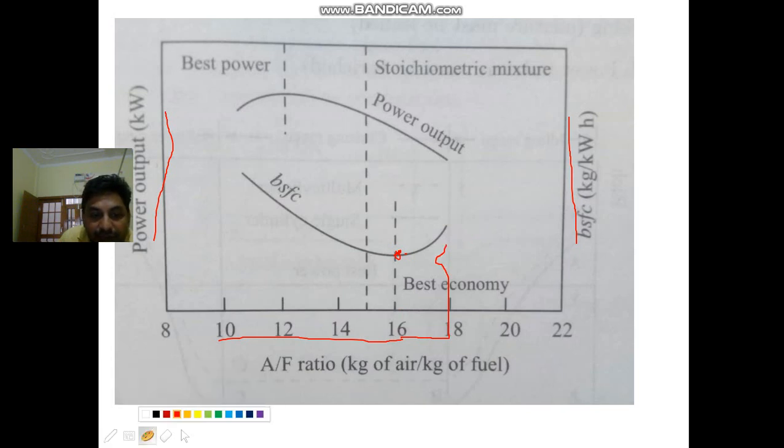You can see that the brake specific fuel consumption is the ratio of fuel consumed. When you increase the air ratio, it is increased, and the best economy you have to get is at 16. When you increase further, then the brake specific fuel consumption increases.